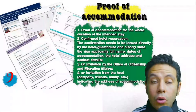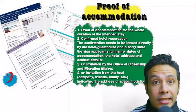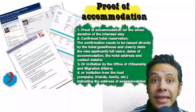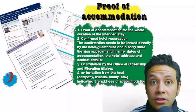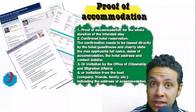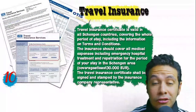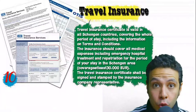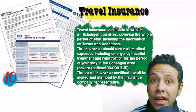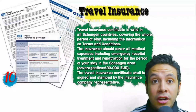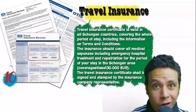You should also provide a flight reservation — an initial booking is usually sufficient, though in some cases a confirmed booking is required, and it must include a return ticket. For proof of accommodation, provide a confirmed hotel reservation, an invitation from a host, or an invitation from an organization you are visiting. For a hotel, an initial booking is acceptable but the name, address, and contact number must be mentioned. If invited by a person, the letter of invitation should be mailed to the embassy or submitted with a copy of the inviting person's passport.